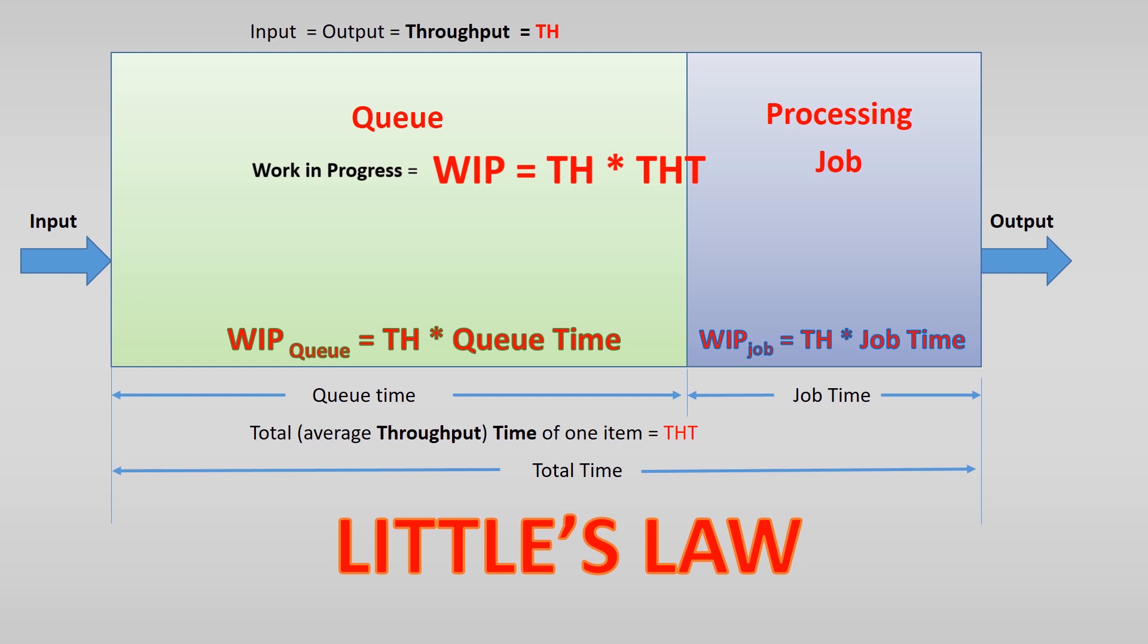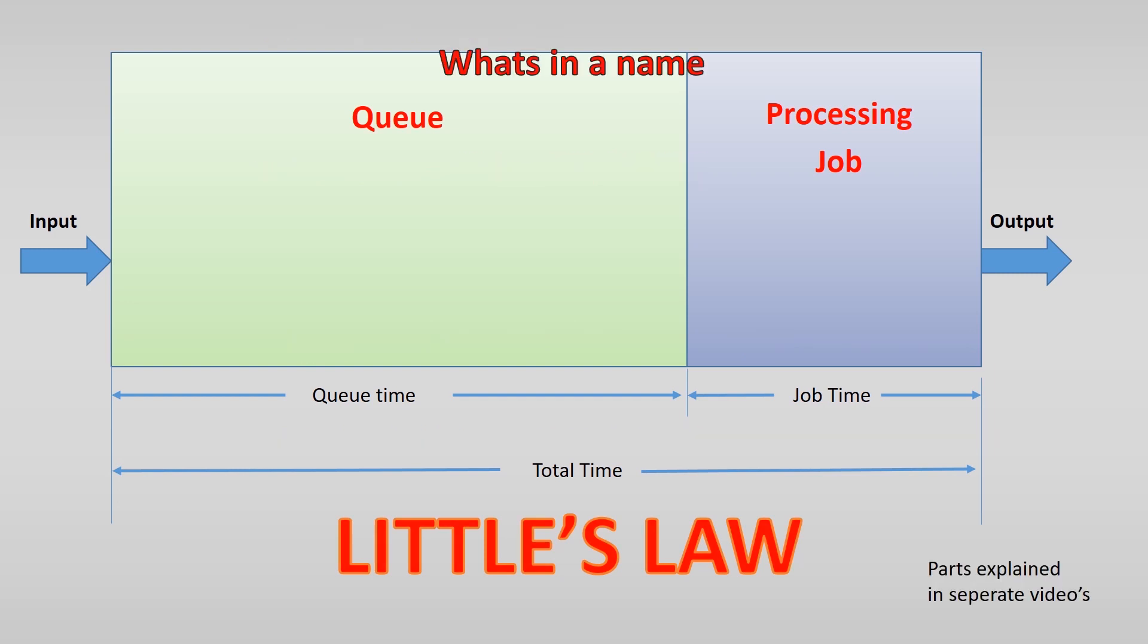As we said at the beginning of this video, depending on the literature you read or who you talk to, Little's Law is stated in different wording. For instance, the total time can be called cycle time. And processing and queue times can have different names too. Well, just read what is in this picture.